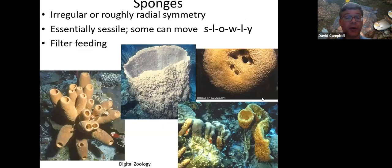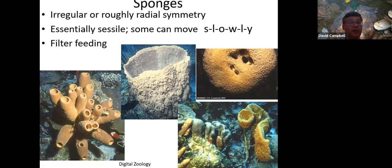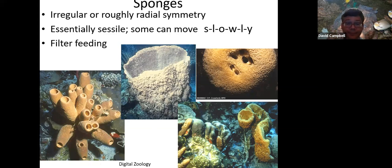One major group of animals, primarily in the ocean with some freshwater forms, are the sponges. Sponges can be basically irregular in shape, or they can be at least somewhat radial in their form. Sponges basically live attached to one spot, though at least some of them can very slowly move — the cells individually are kind of creeping along and gradually the whole sponge can move a bit, but it's quite slow. Most sponges are filter feeders — water flows through and they capture very small things like bacteria, absorbing dissolved organic material out of the water.